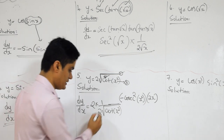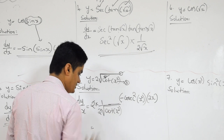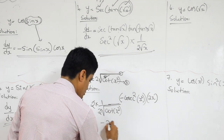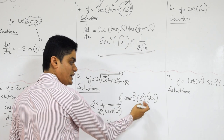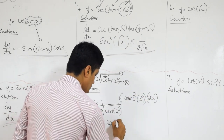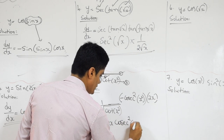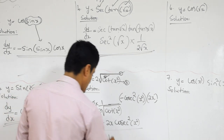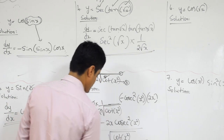Simplification: 2 and 2 get cancelled with just rearrangement. There is not much simplification. Final answer is minus 2X into cosecant squared of X squared divided by root of cot of X squared. Remember: don't multiply these two — this is inside this, this is outside this.